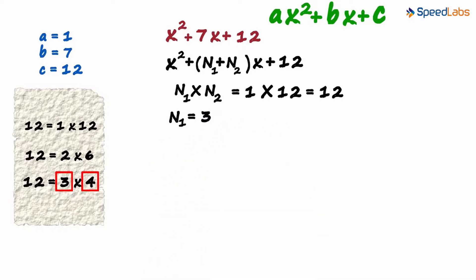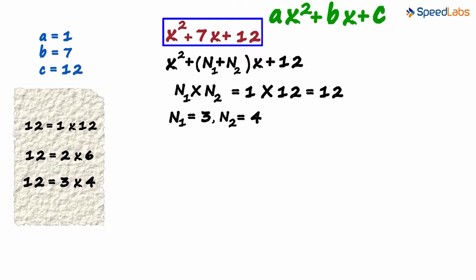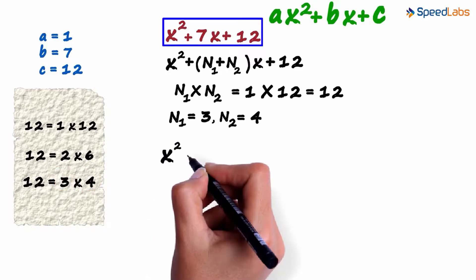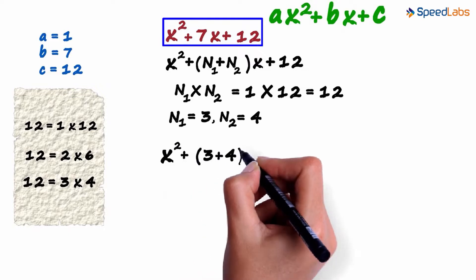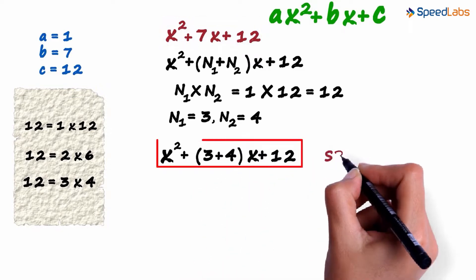n1 is 3 and n2 is 4. So we can rewrite the main polynomial as x squared plus 3 plus 4 times x plus 12. This step is called splitting the middle term.